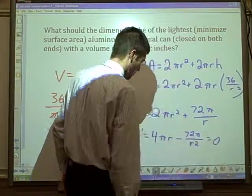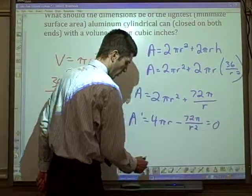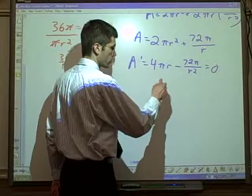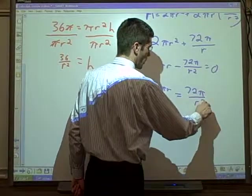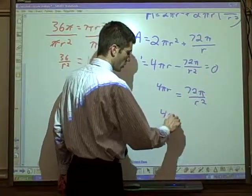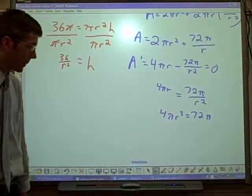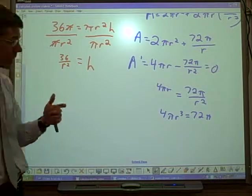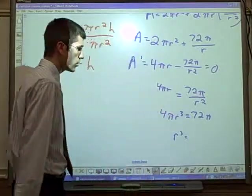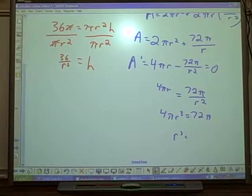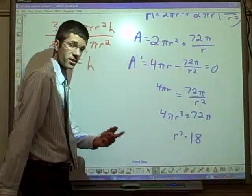We're going to set that equal to 0 and solve. When we set it equal to 0, we can easily move this term over. We'll wind up with a fraction that could be cross-multiplied. Two fractions. 4πr over 1 equals 72π over r². Cross-multiply those. 4πr³ equals 72π. Something magical is about to happen. We'll divide by 4 and by π. r³ equals 72 divided by 4, I believe that is 18. Now this next one I cannot do in my head. We need to take the cube root of 18.